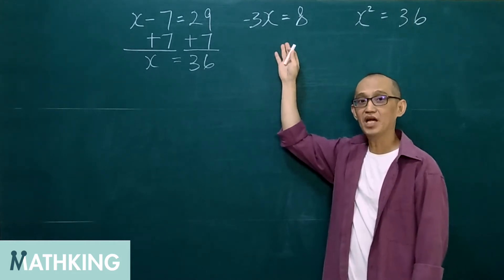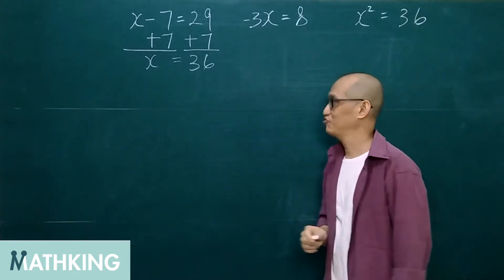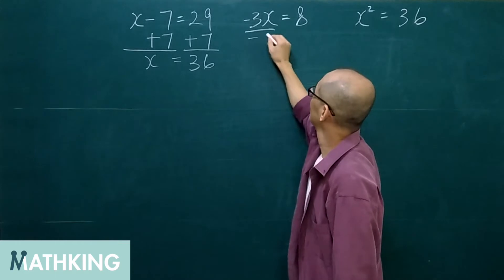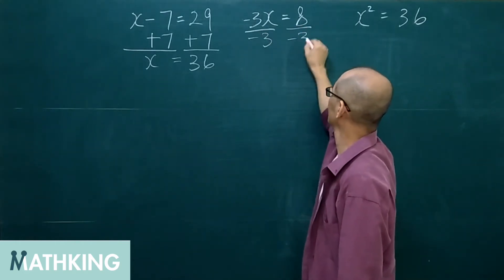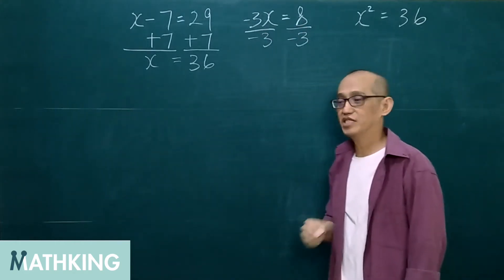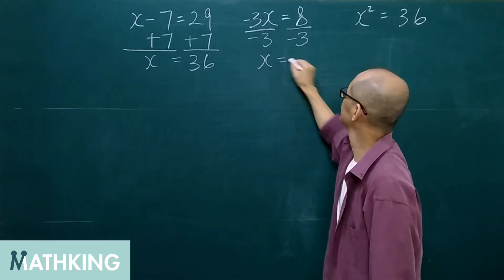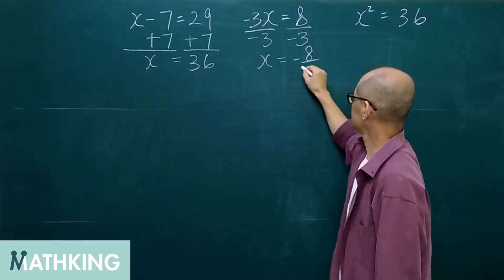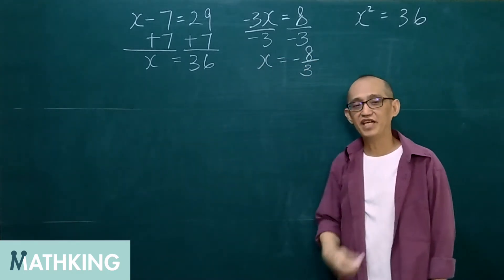This one, we are going to divide both sides by negative 3. And we get x equals negative 8 over 3.